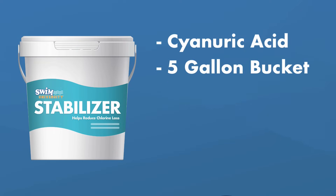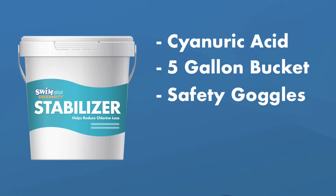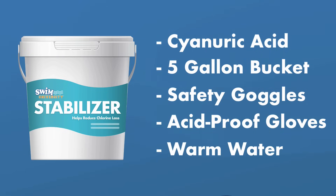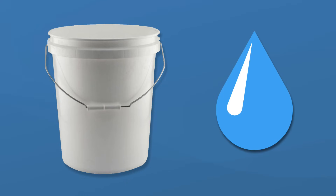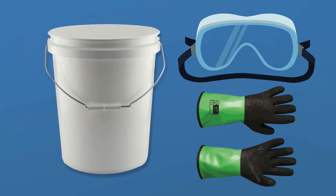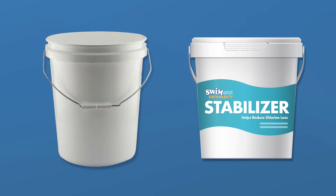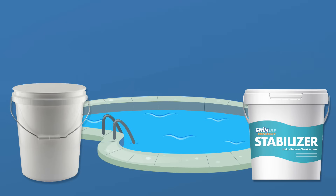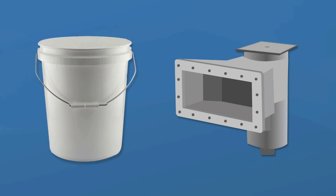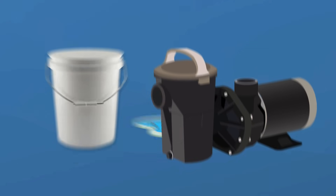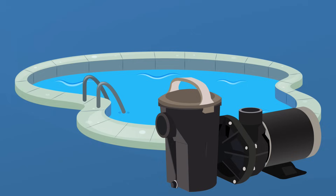Here's the way we recommend adding it to your pool. You're going to need cyanuric acid, a five-gallon bucket, safety goggles and acid-resistant gloves, and warm water. First, fill the bucket at least halfway with warm water. Put on your gloves and goggles and add a dose of cyanuric acid to the bucket. Check the product instructions for your pool size. As a general rule, for a 10,000-gallon pool, you'll need to add 13 ounces of cyanuric acid to increase your CYA by 10 parts per million. Pour the contents of the bucket directly into your skimmer and then run your pump for at least a few hours to stir the solution into your pool.